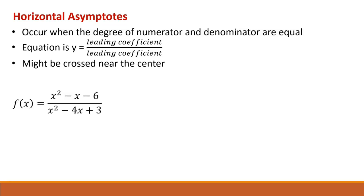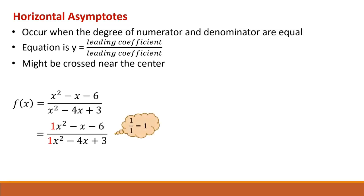We just found the vertical asymptote for this function. Now let's find its horizontal asymptote. The highest degree in the numerator and denominator is the same — both have a highest degree term of x squared. The leading coefficients are both understood to be 1. So 1 over 1 equals 1, meaning the horizontal asymptote is the line y equals 1.